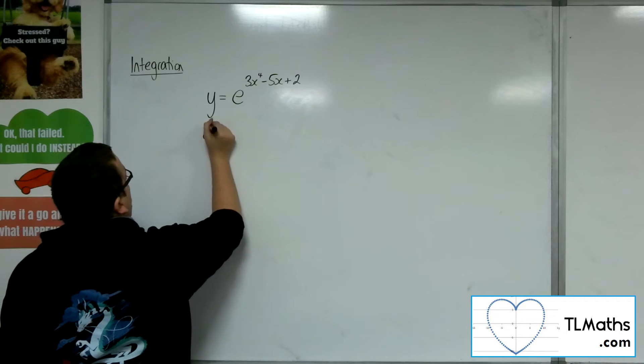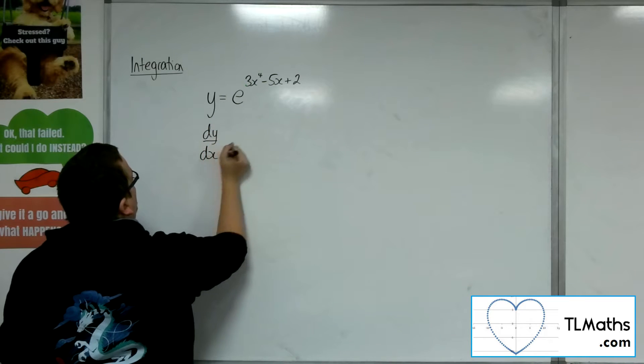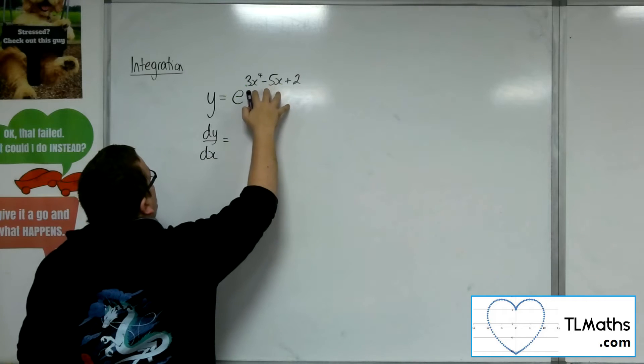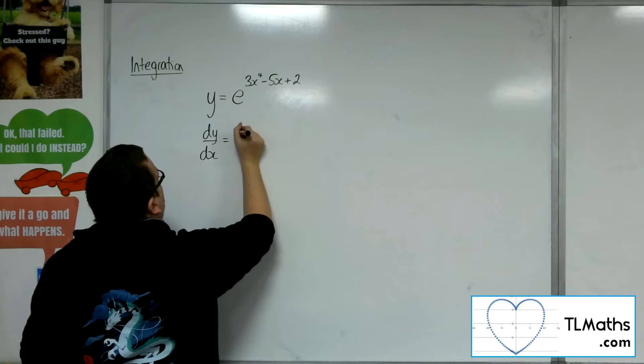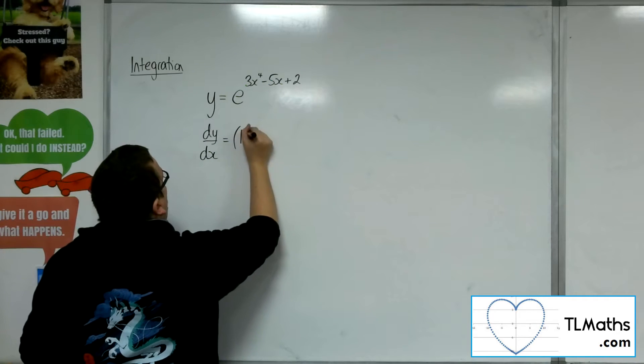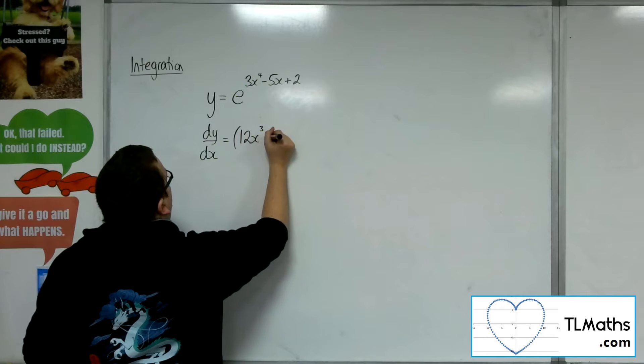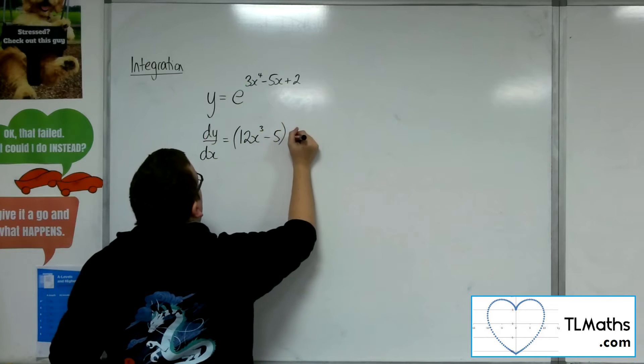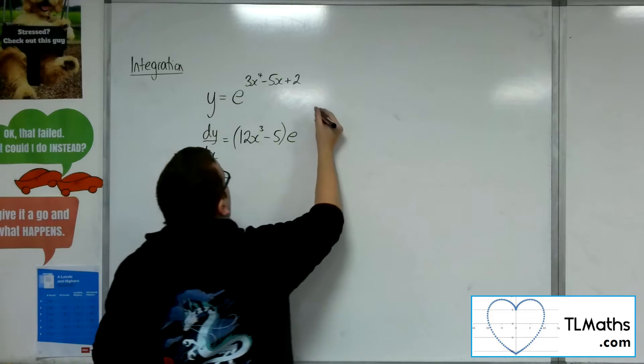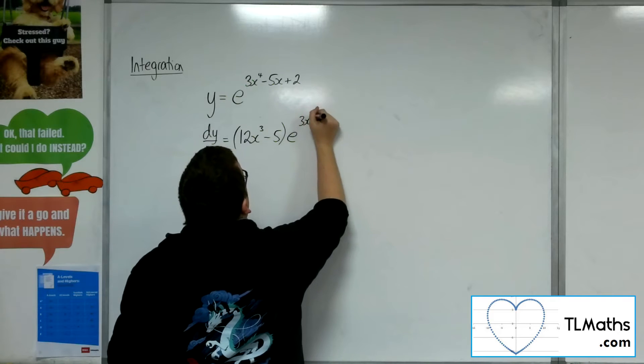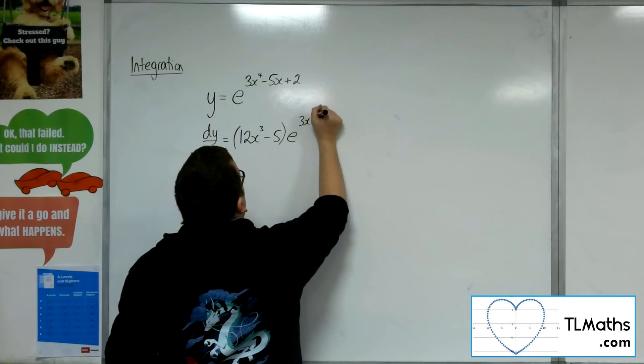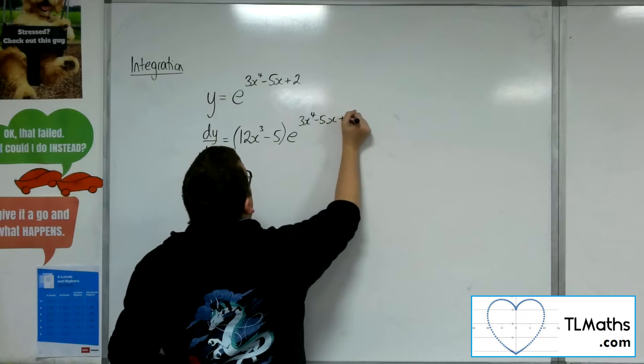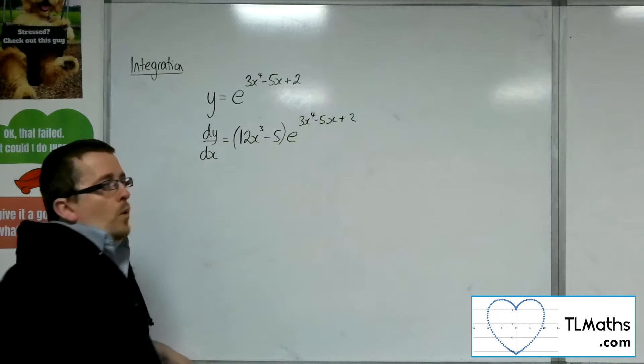So dy by dx, the derivative of what's inside the function comes outside. So that will be 12x cubed take away 5. And e just differentiates to itself, so that won't change much at all. In fact, that is dy by dx.